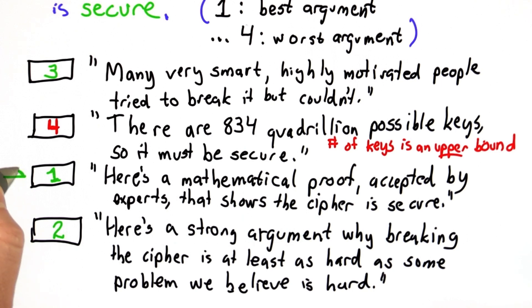So our best possible argument is to have a mathematical proof, and that's what Claude Shannon was able to do for the one-time pad. And it's really a fairly unusual case where we can get a mathematical proof that's that strong.